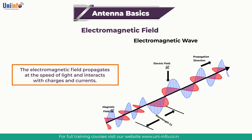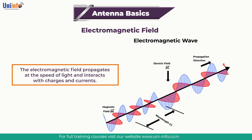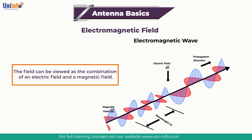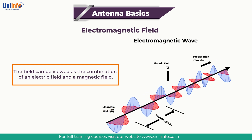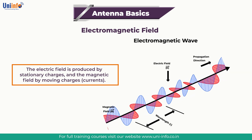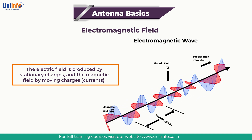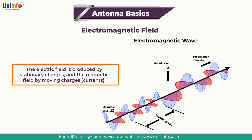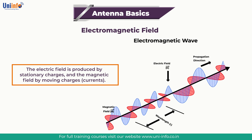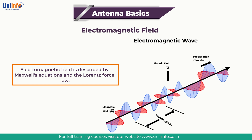Its quantum counterpart is one of the four fundamental forces of nature. The others are gravitation, weak interaction, and strong interaction. The field can be viewed as a combination of an electric field and a magnetic field. The electric field is produced by stationary charges and the magnetic field by moving charges, i.e. currents. These two are often described as the sources of the field. The way in which charges and currents interact with the electromagnetic field is described by Maxwell's equations and the Lorentz force law.